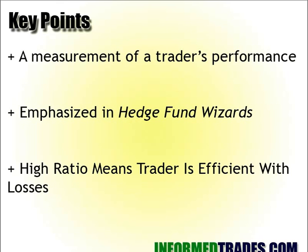A higher ratio means the trader is more efficient with losses. So if you calculate your gain-to-pain ratio and it gets higher, that means you're more efficient with losses. If you view losses as a cost of doing business — a cost of finding the winning trades — a high gain-to-pain ratio suggests you're really getting the most out of those losses.